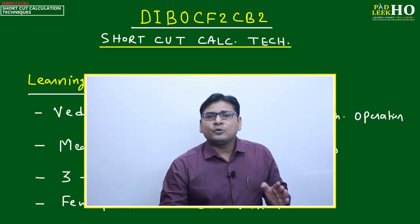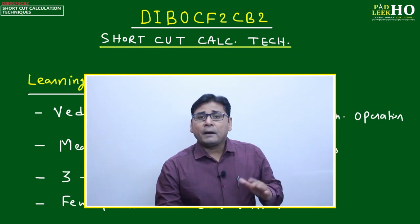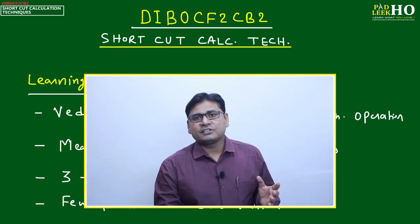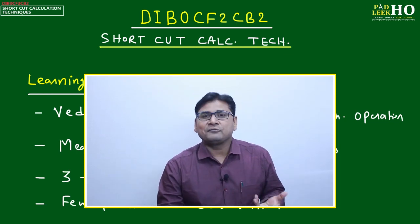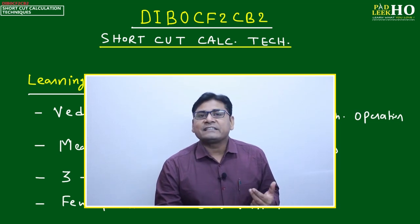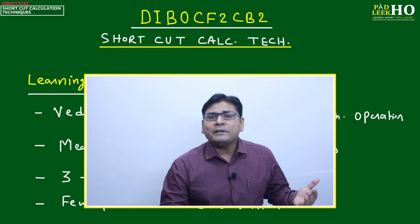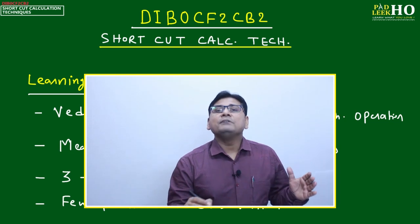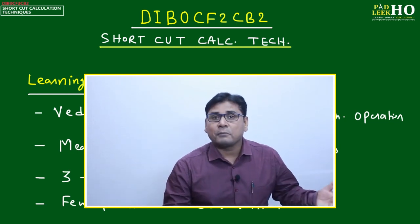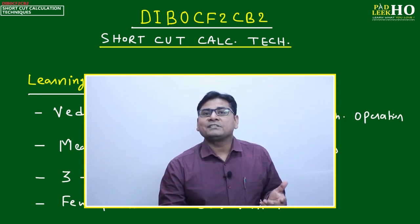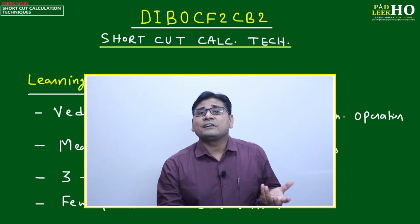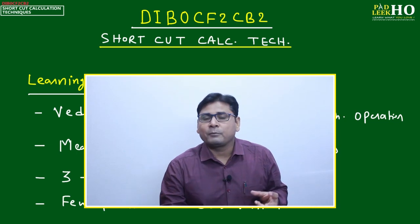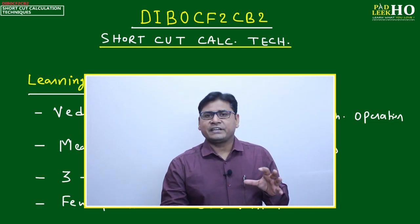The key areas are speed calculation, approximation, and comparison. The meaning of 'calculation technique' is not limited to doing multiplication fast. It includes knowing about the different types of data distribution — how data can be represented in different formats — because if you don't know the different types of data representation, it will take a lot of time to decipher and reconvert data into a mathematical format.